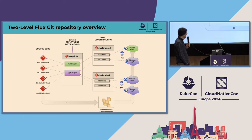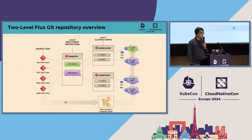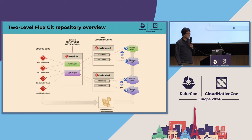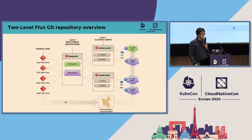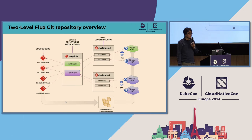On the right side you see a lot of clusters. We have two groups: production clusters and test clusters. Let's start with level two, which we call the Blueprints Git repository. This repo contains deployment instructions for typical workloads you want to deploy on every type of cluster. For example, you have two Blueprints — one that deploys a Vault server and another that deploys an application comprised of several Helm charts. The Vault Blueprint is deployed in one production cluster, and the application Blueprint is deployed across three different clusters.